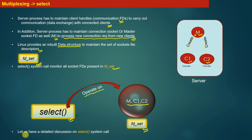Next, let us have a detailed discussion on the select system call — how exactly it works. Once you understand the mechanism of the select system call, it will be very easy to implement a server with multiplexing capabilities.